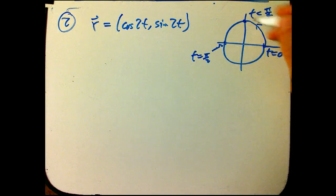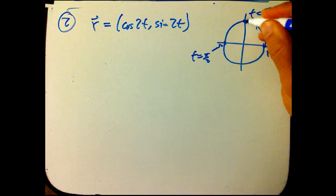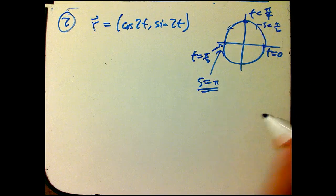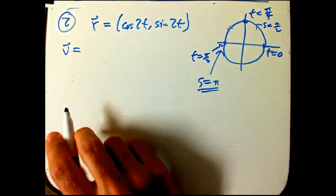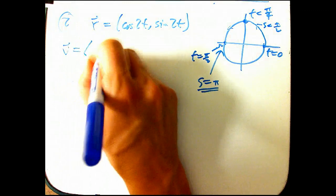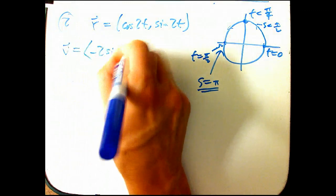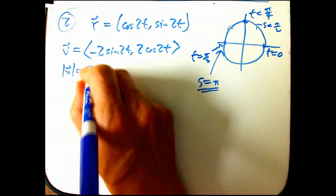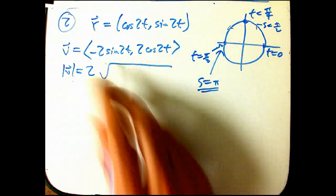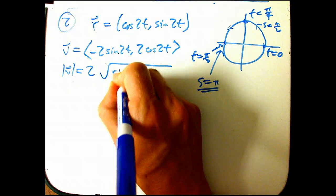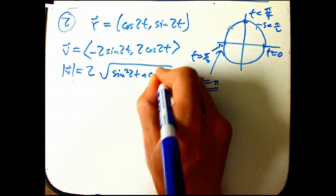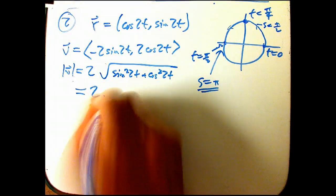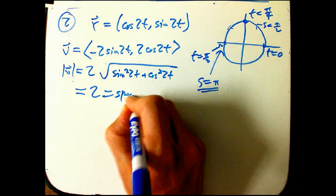But this is still s equals pi over 2 up here, and this is still s equals pi because those are geometric. Those are really length measurements. That hasn't changed. So let's calculate the velocity and make sure that that's consistent with what we're seeing there. That's minus 2 sine 2t, 2 cosine 2t. So the magnitude of that, just factor out the 2. You can always factor out a constant factor. And then we just get sine squared 2t plus cosine squared 2t. It doesn't matter that it's a 2t. It's still sine squared plus cosine squared of something. It's still 1, and so the magnitude is 2. So that's the speed.